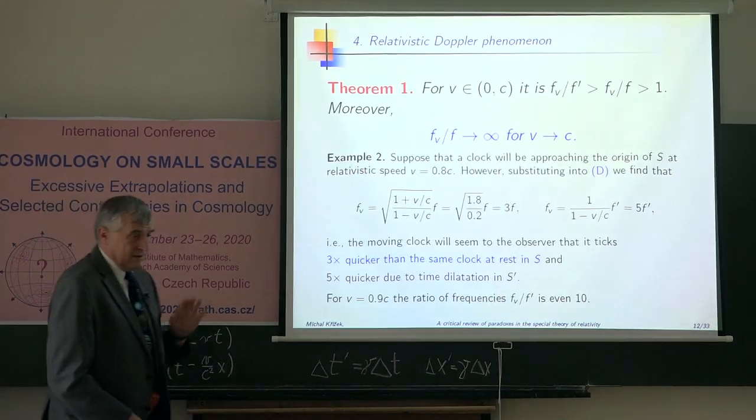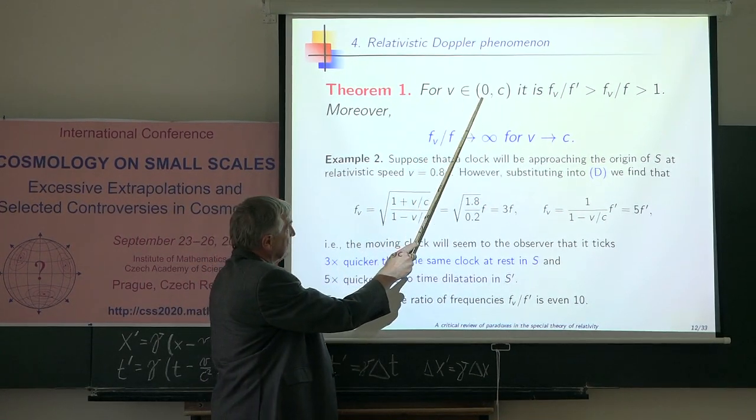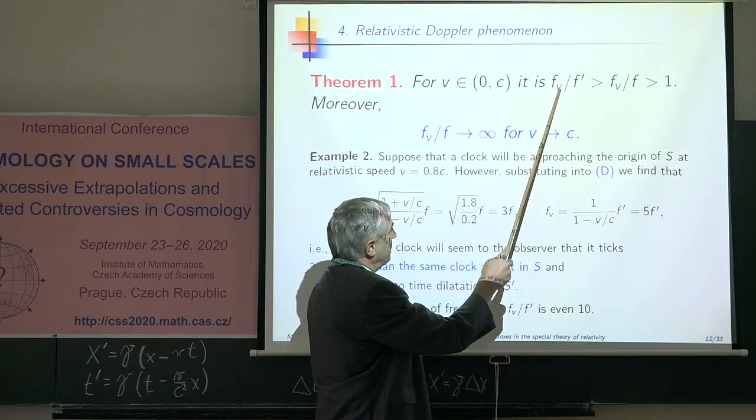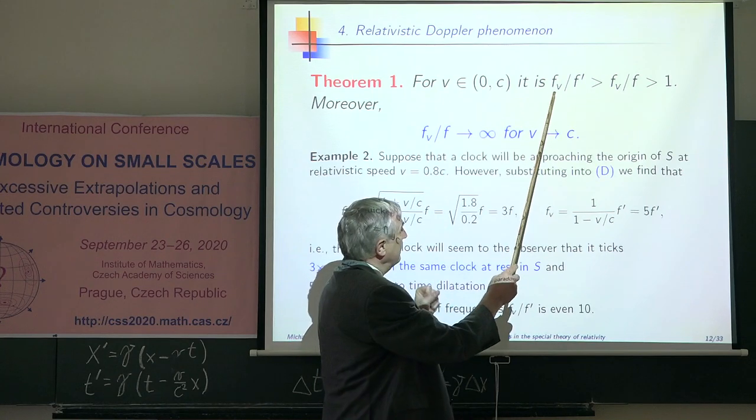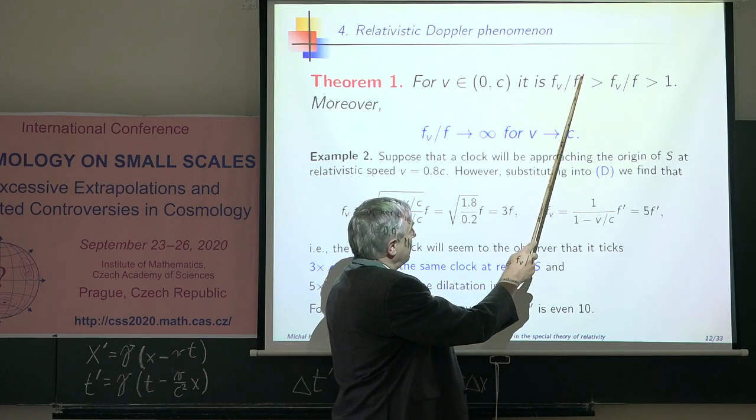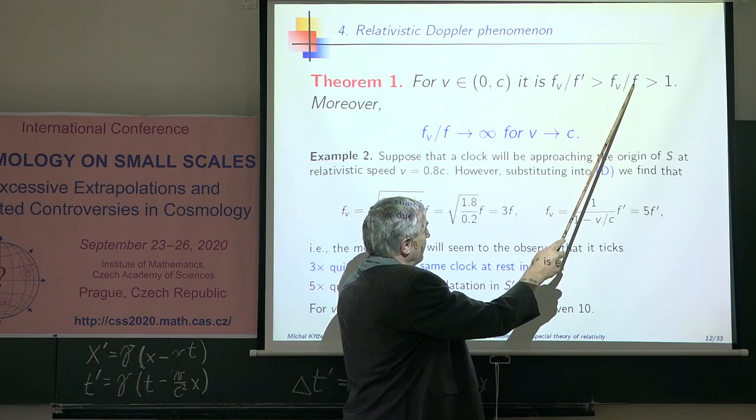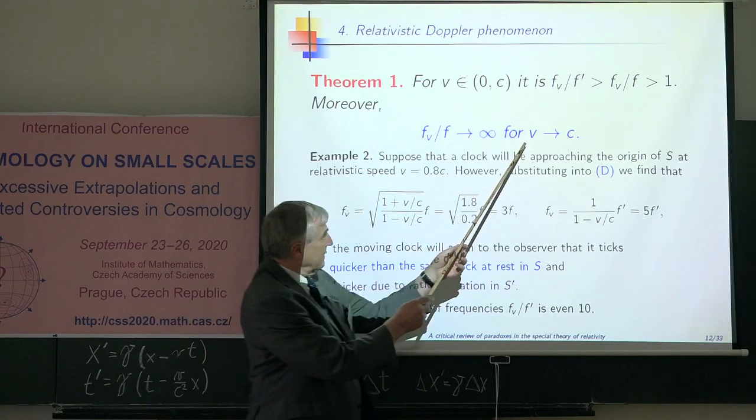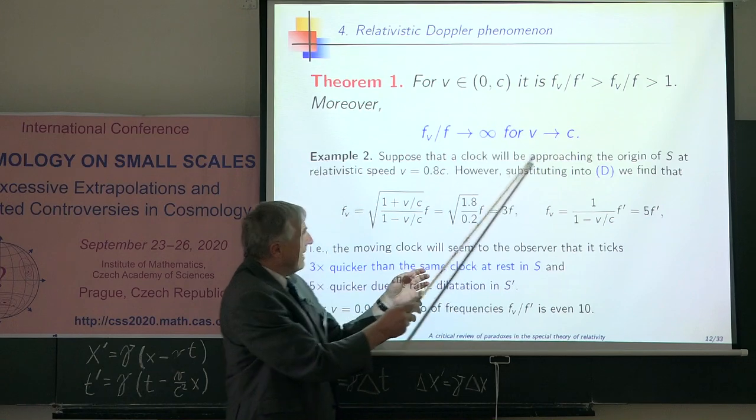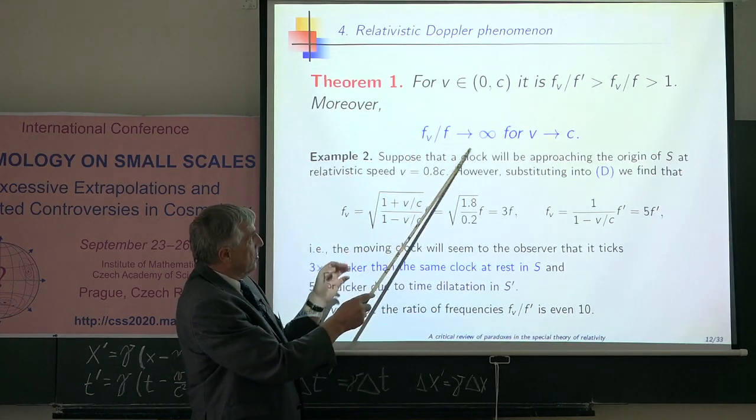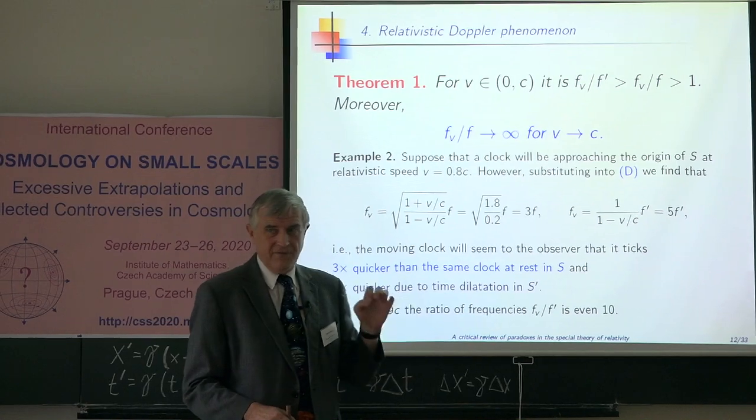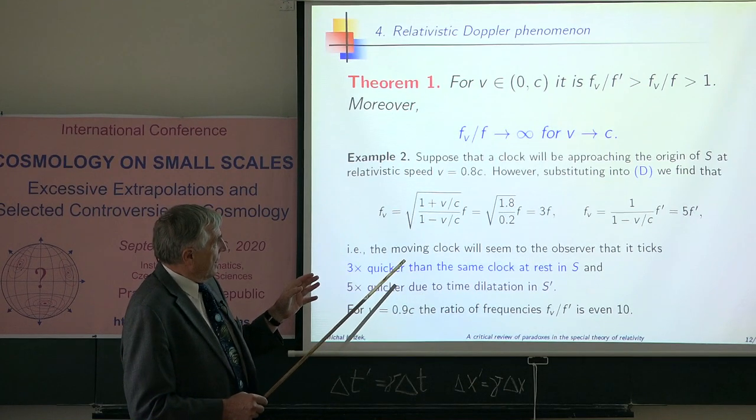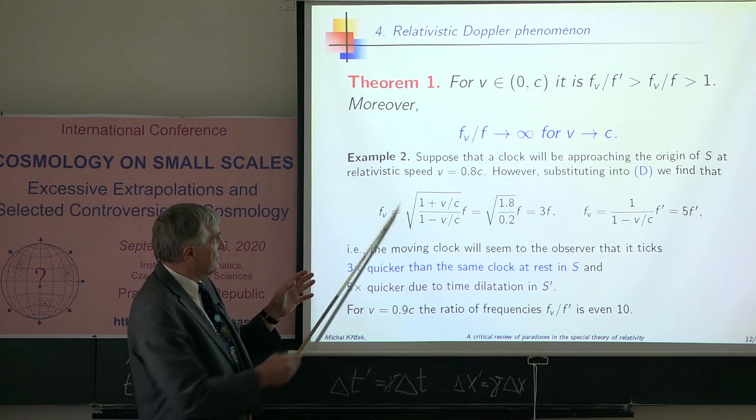Now, theorem: for v in between zero and c, you always have, if you divide this f_v, the Doppler velocity, by f prime, it is greater than gamma f divided by f and it is always greater than one. Moreover, if v tends to c, speed of light, then this ratio tends to infinity. This means that the Doppler phenomenon is much stronger than dilation of time.